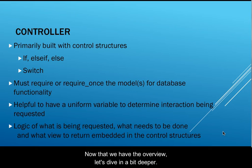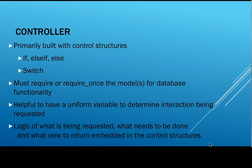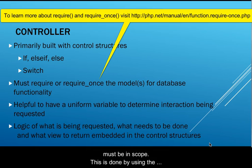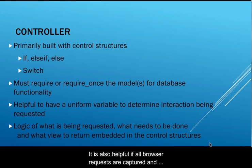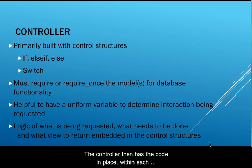Now that we have the overview, let's dive in a bit deeper. The controller is primarily a series of control structures used to determine what is being requested from the browser. In order to have access to the functions stored in the model, the model or models must be in scope. This is done by using the require or require_once statement at the top of the controller. It is also helpful if all browser requests are captured and stored into a single uniform variable, such as action, for testing in the control structures. The controller then has code within each control structure to know what to do to fulfill the various browser requests.